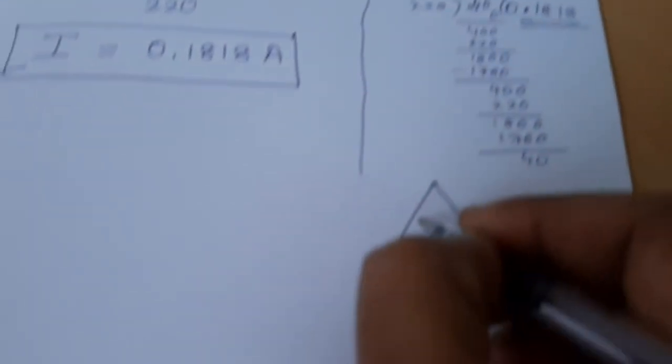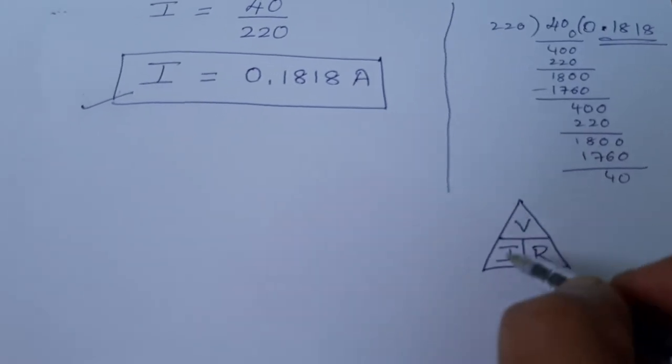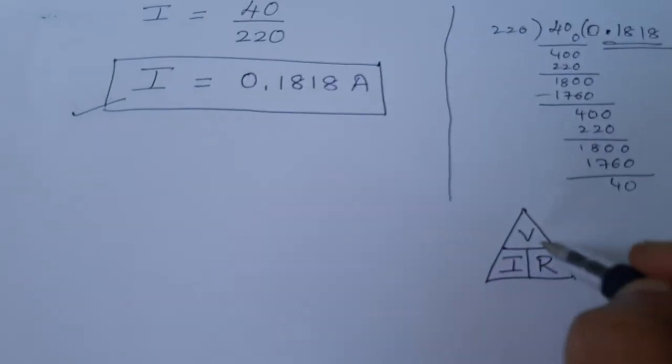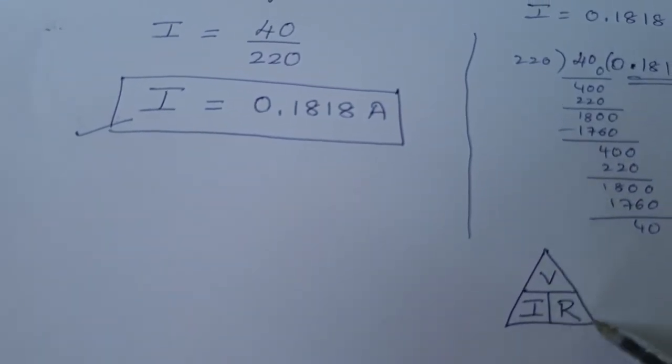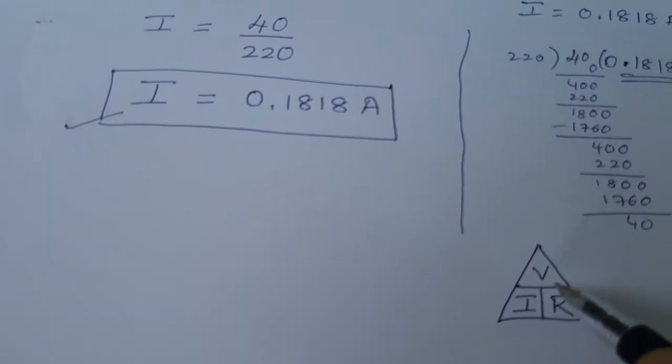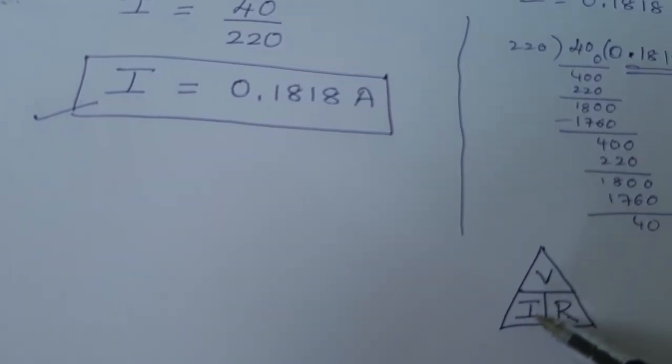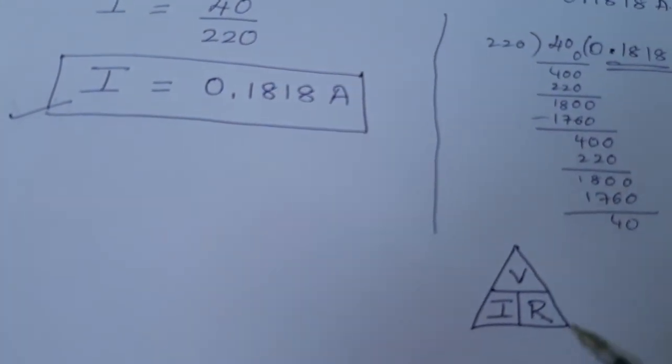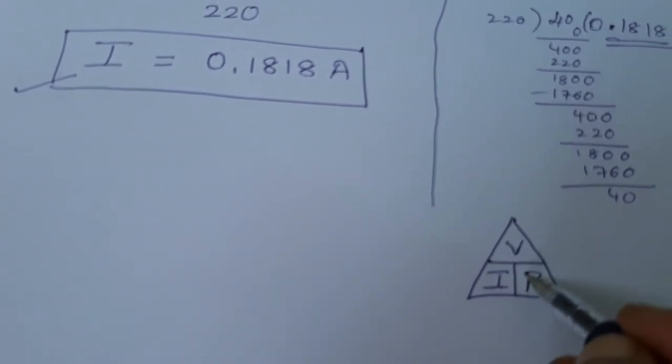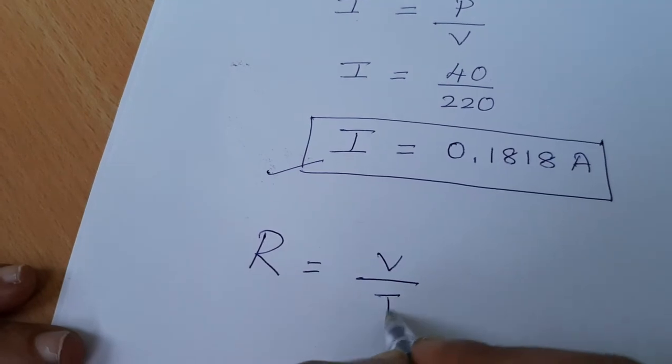Let me write the formula for resistance. We all know the magic triangle: V, I, R. If you put the triangle and fill with V, I, R, by using this magic triangle we can get the formula to calculate resistance. You can get three formulas: V equals IR, I equals V by R, R equals V by I. This is a very good magic triangle. Please write this two or three times and remember.